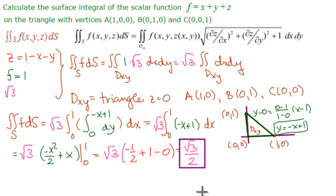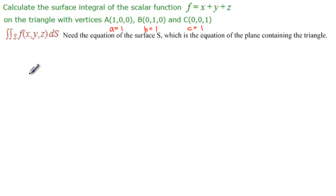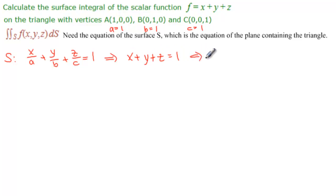Now let's discuss the shortcuts we could have taken. The first shortcut: to find the equation of the plane, we notice that A(1,0,0) is on the x-axis with intercept 1, B(0,1,0) is on the y-axis with intercept 1, and C(0,0,1) is on the z-axis with intercept 1. We could have used the intercept formula x/A + y/B + z/C = 1 to immediately get x + y + z = 1, and then z = 1 - x - y. But that only works for special points.